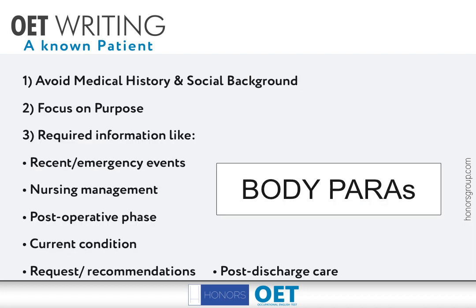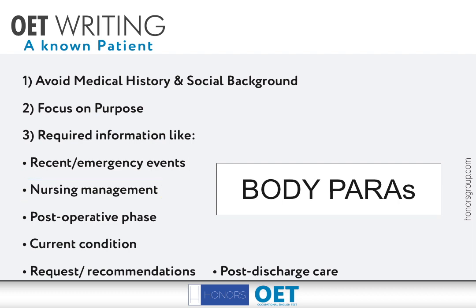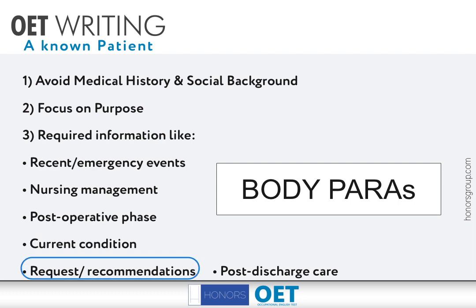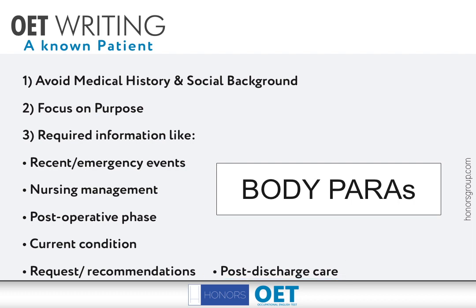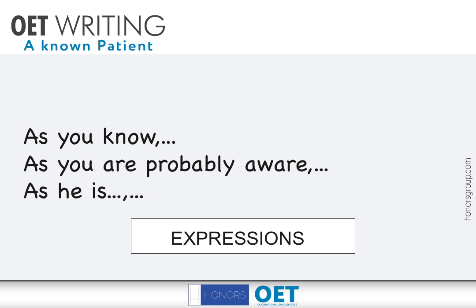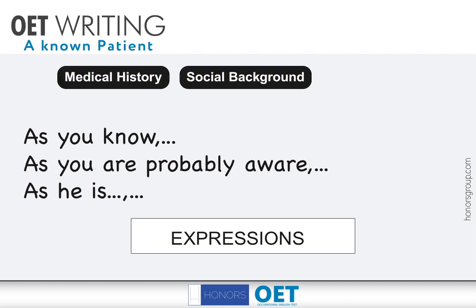And yes, avoid medical history and social background. Focus on the purpose of the letter, and write information required for the reader. You will be writing information like about recent emergency events, nursing management, condition of an operation, current condition, and the request or recommendation part — about the post-discharge care, things to note. You can also use expressions like 'as you know' or 'as you are probably aware' in order to remind the reader about any event from the patient's medical history or social background, or while connecting any relevant case note.